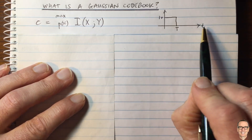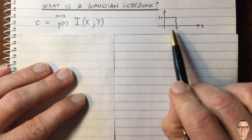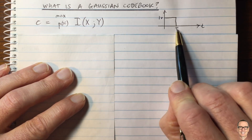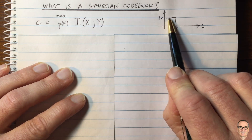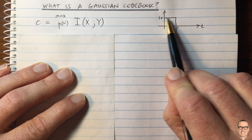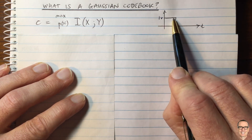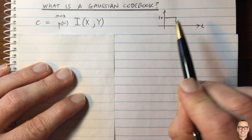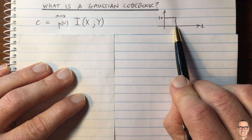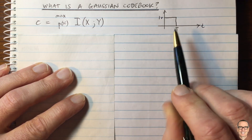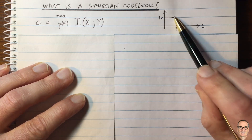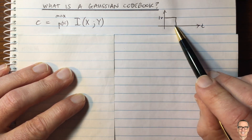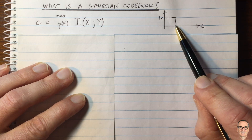Here is a waveform in time. Over a period of time, capital T, we're going to send either this signal — which is one volt for that period — or we'll send nothing. And that's going to represent the binary one or the binary zero.